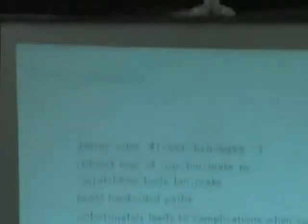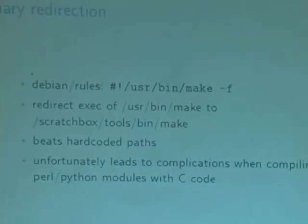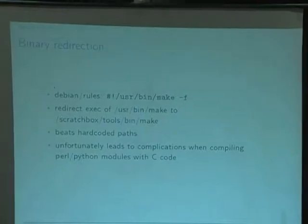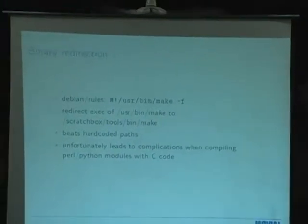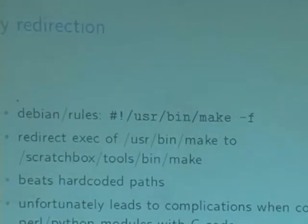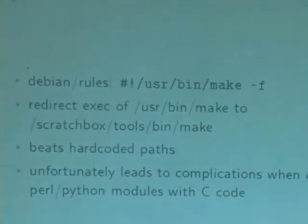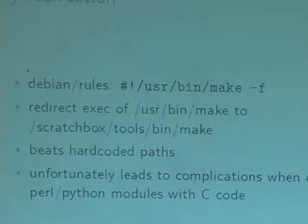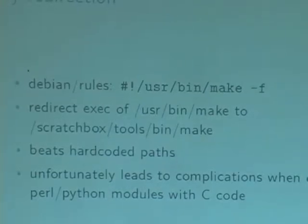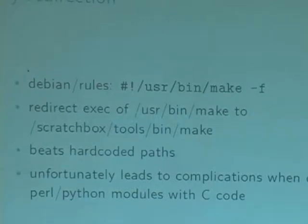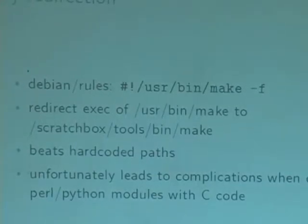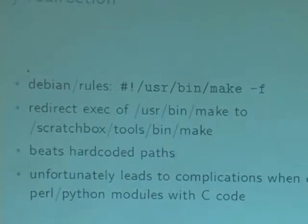Binary redirection is needed because we move everything into Scratchbox, which means that if you have something like a hash-bang in a Debian rules file, it will fail — either the tool hasn't been compiled yet, or it's an ARM binary and it won't load. So you want to redirect it to the correct host tool. For this reason there is a library preload hack to redirect it to the correct path. This has the problem that if you're trying to build Perl or pipe modules, it usually redirects you to the wrong Perl version, and there are some ways to work around it.